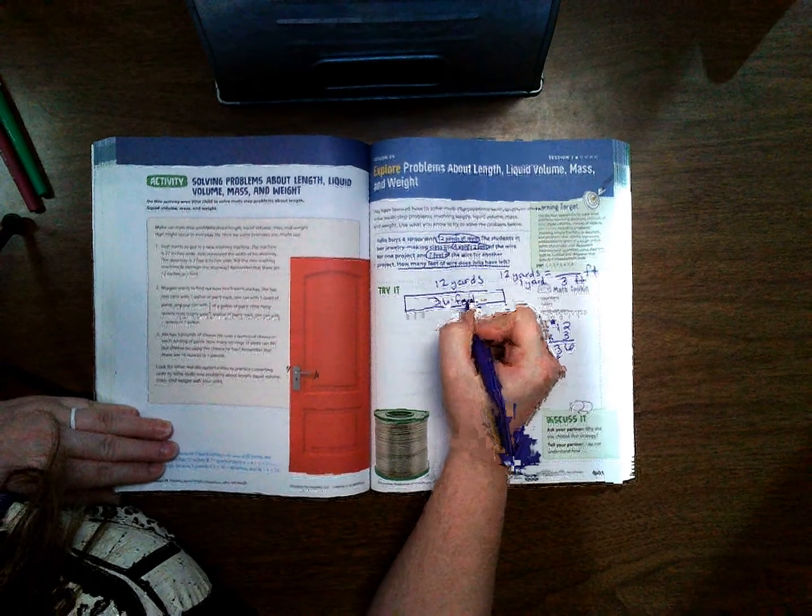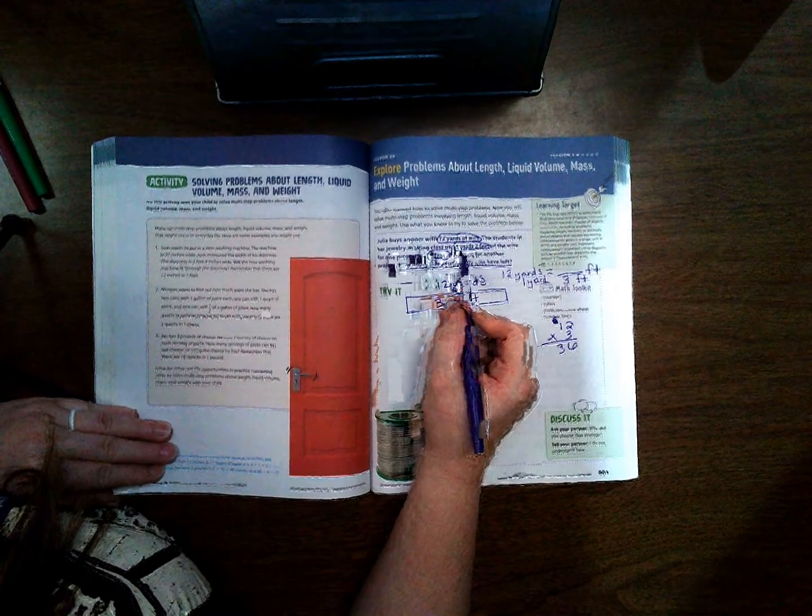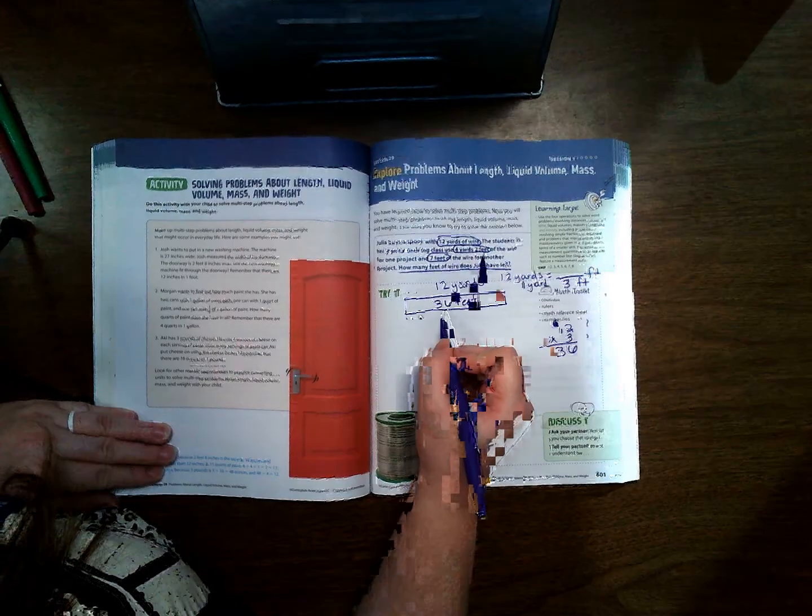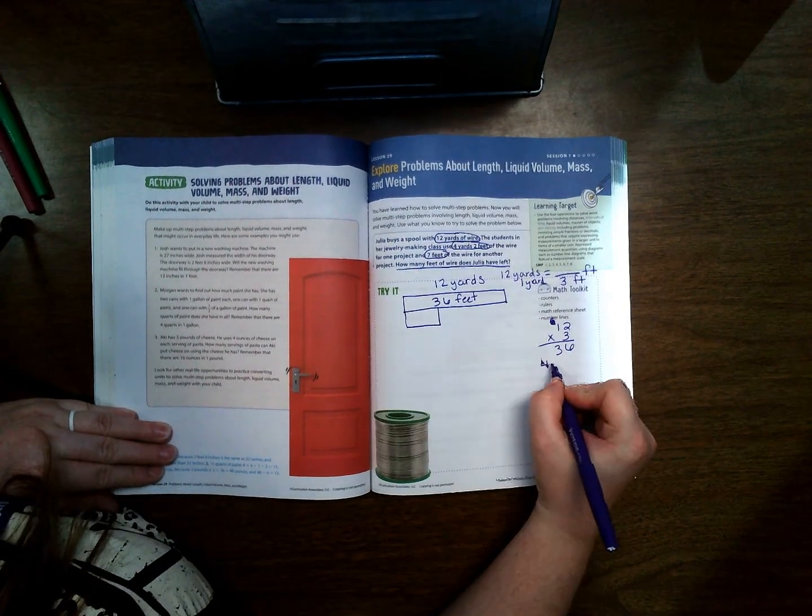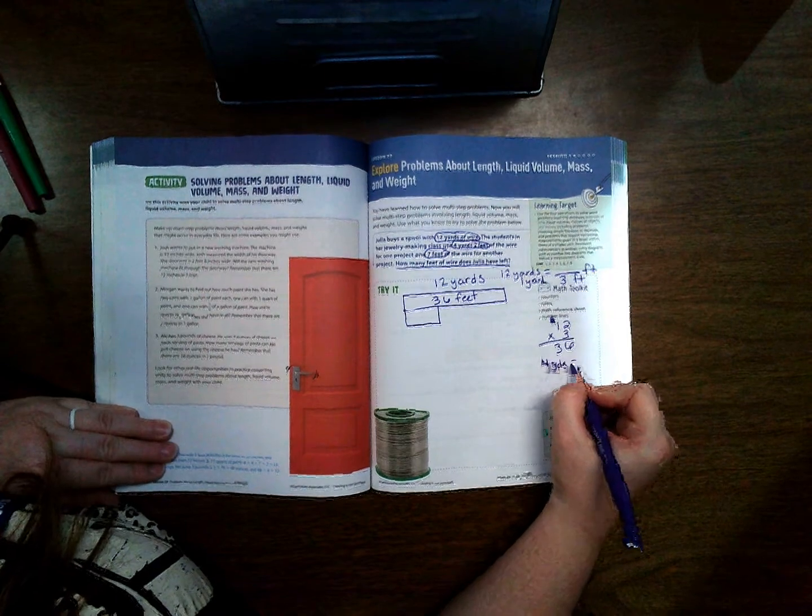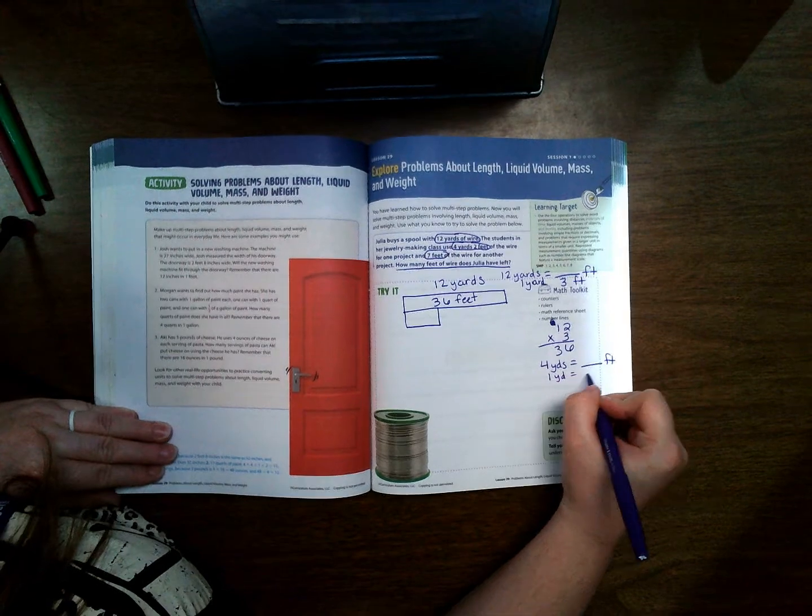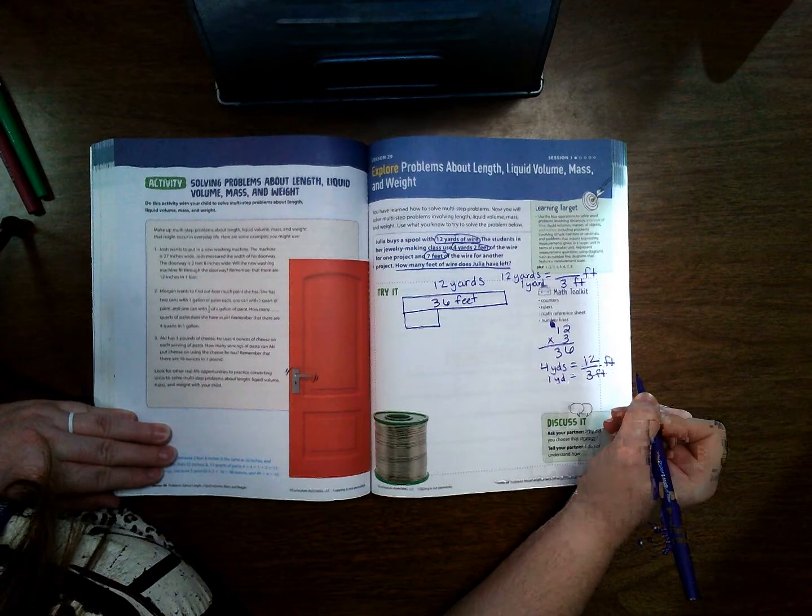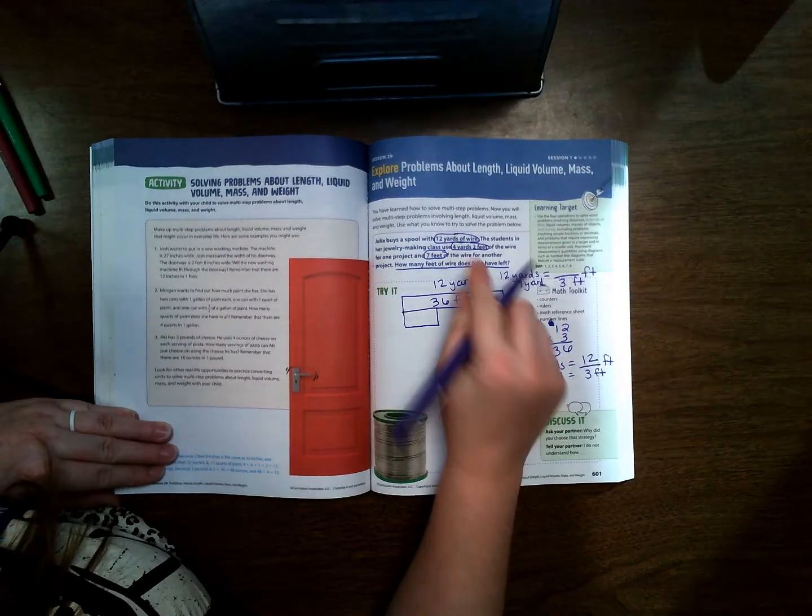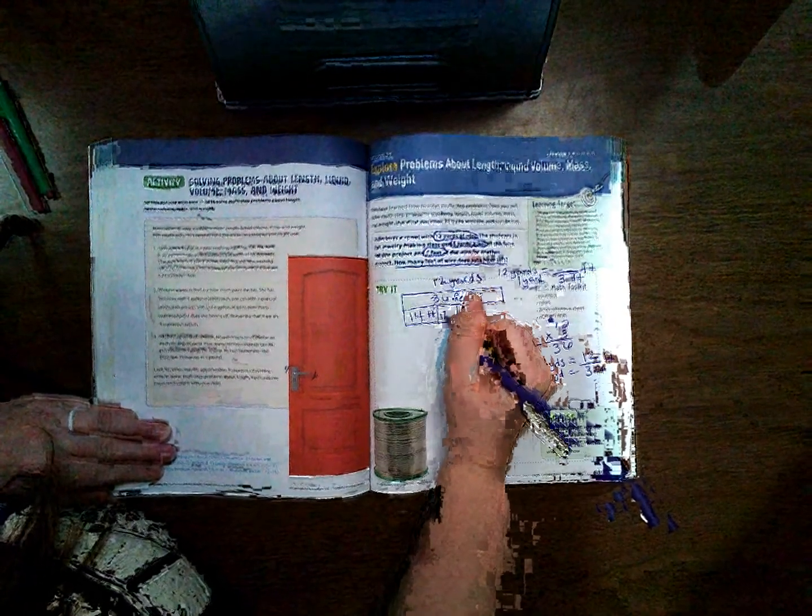So in her jewelry making class they use four yards two feet. Okay, so again we have to figure out four yards two feet. One yard equals three feet, so four times three is 12, but we have two more, so 12 plus 2 is 14 feet in one of her classes. And it says seven feet in her other class.